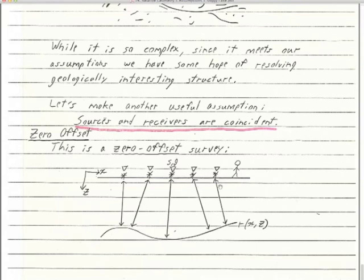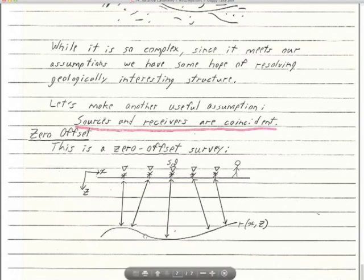The midpoint X_M is the same as X_S, which is the same as X_G — the midpoint, source, and receiver are all located at exactly the same spot. But that's not the same as the depth point; the depth point is away from that. We're going to figure out how to migrate the assumed midpoint location to the true depth point location, which depends on the dip of the structure. Where we have zero dip, migration won't do anything — we don't need migration if we have zero dip.